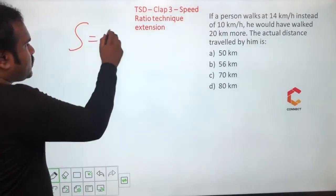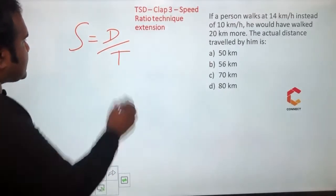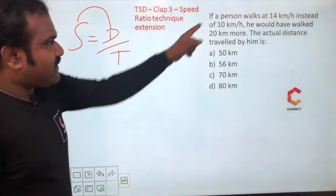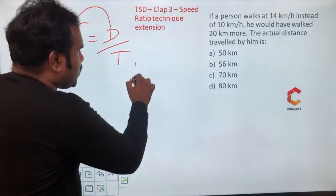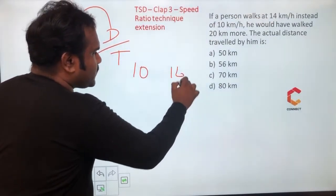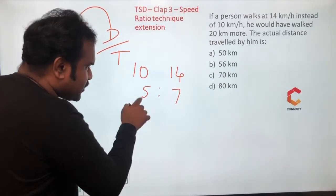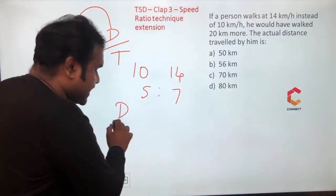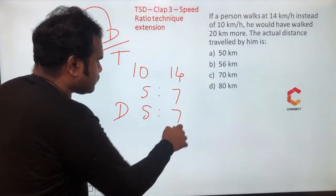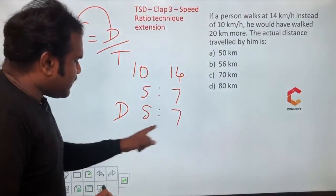What's the relationship between speed and distance? Speed equals distance divided by time, so speed is directly proportional to distance. When we take the speed ratio: normally 10 km, now it is 14 km — what is the speed ratio? 5 is to 7. Speed ratio is 5:7, then the distance ratio is also 5:7.